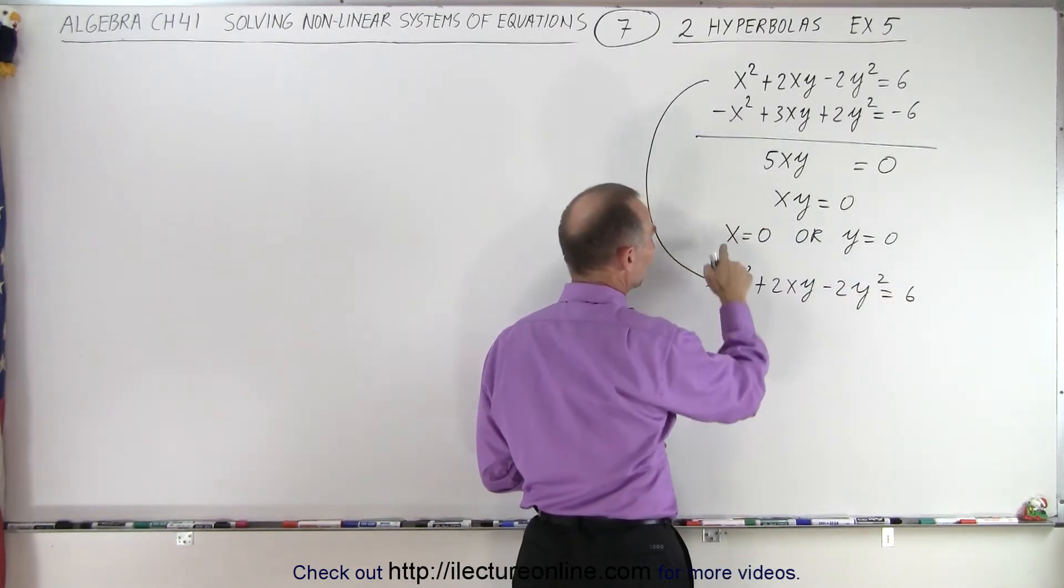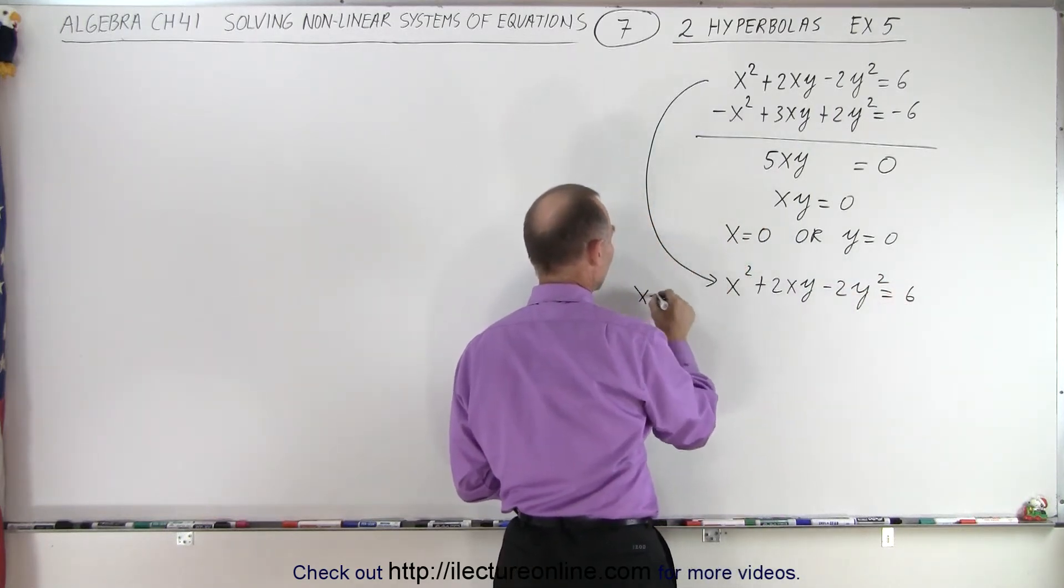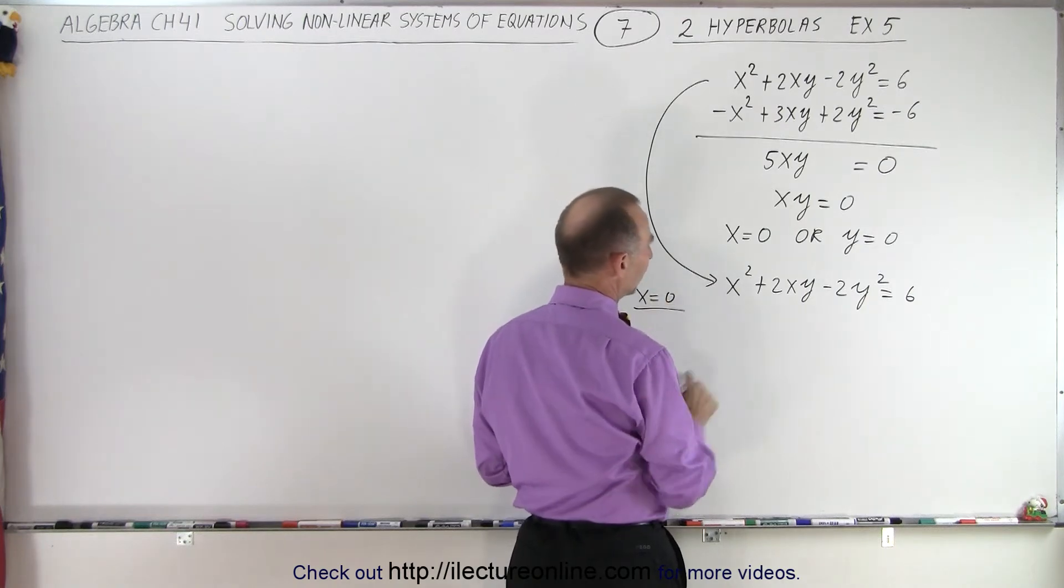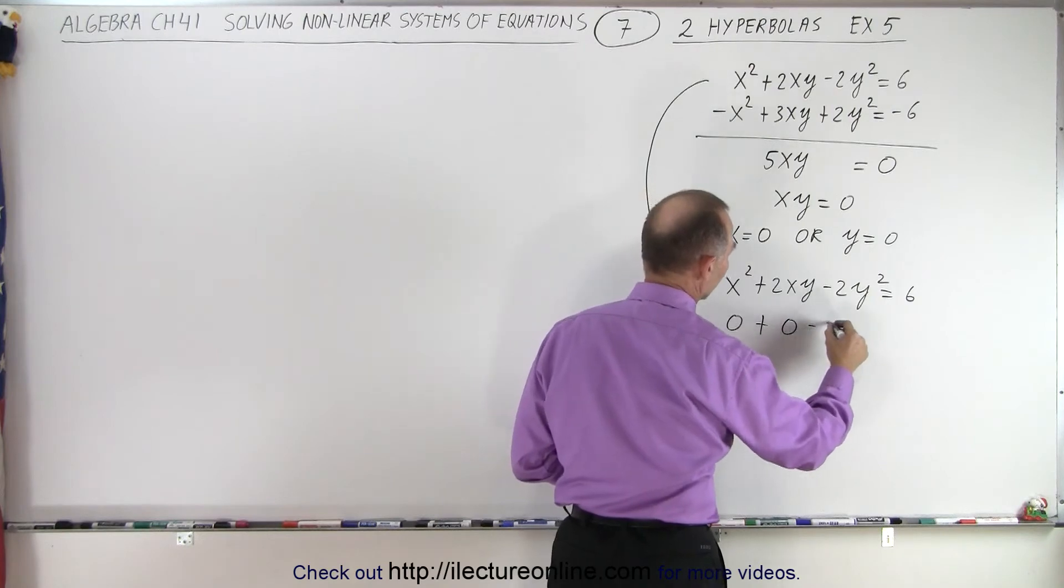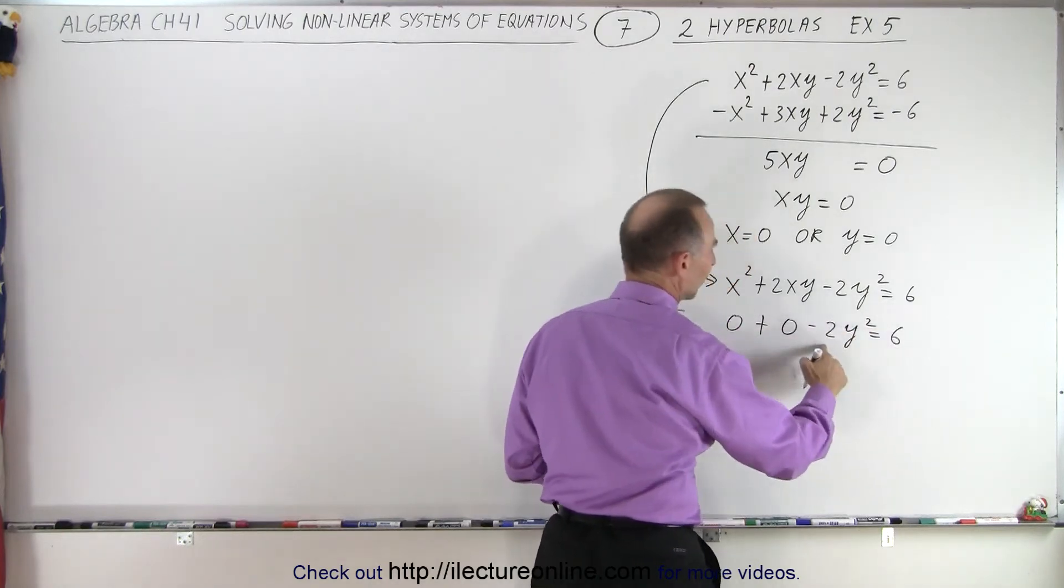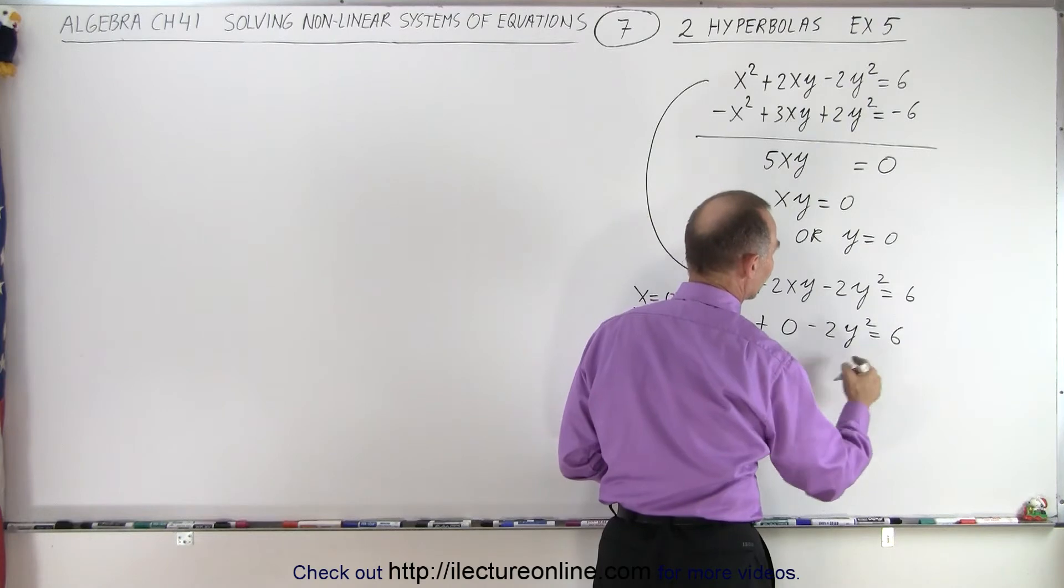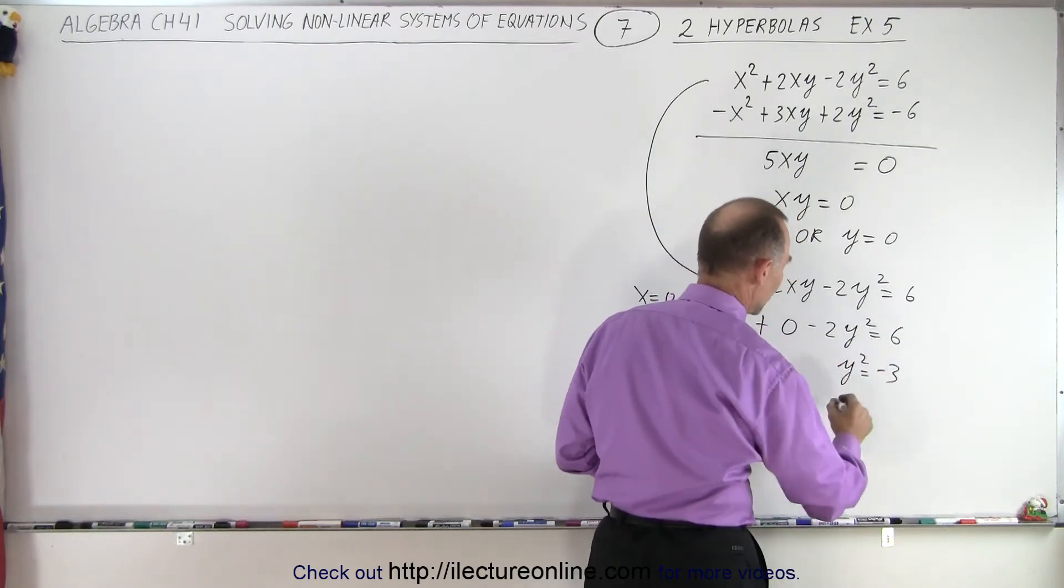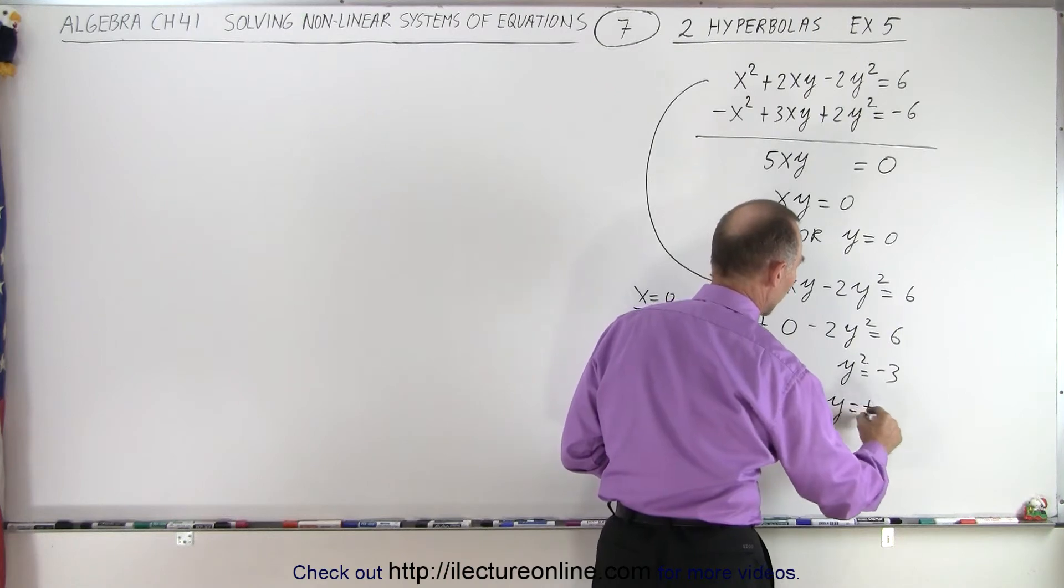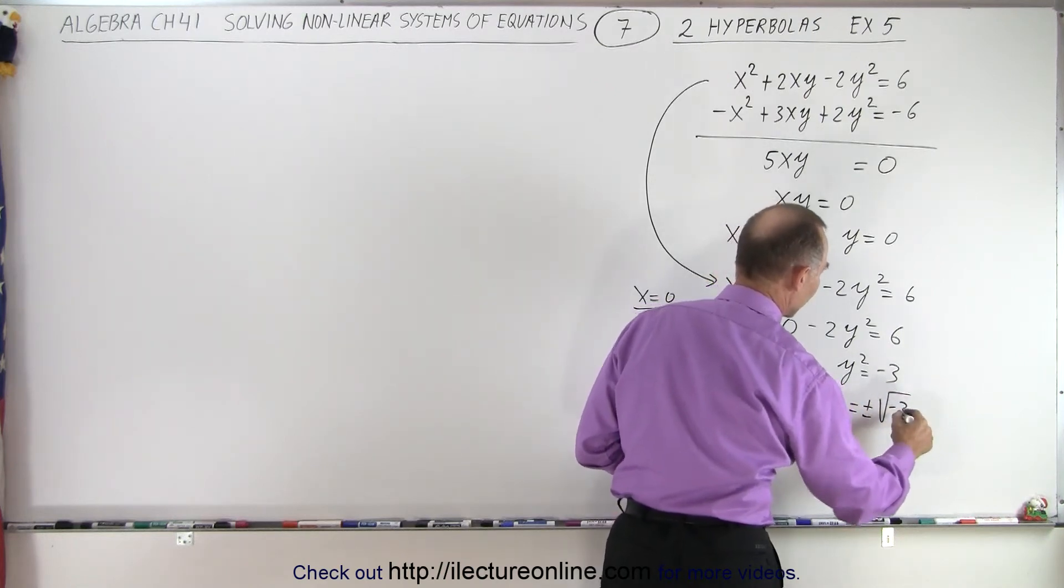And now what we're going to do is we're going to start with x equals 0. If x equals 0, then we get 0 plus 0 minus 2y squared is equal to 6. Divide both sides by a negative 2. We get y squared is equal to negative 3, which means that y is equal to plus or minus the square root of negative 3.